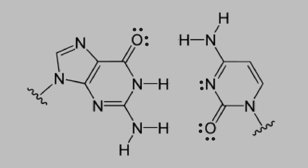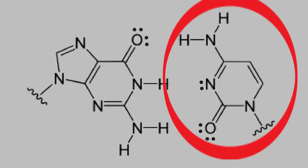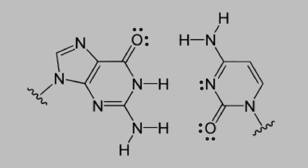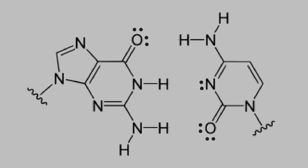As another example, here's a portion of a DNA molecule. This structure is part of one strand of the DNA, and this part is on the other strand. As you can see, each side has hydrogens attached to oxygens or nitrogens, and on the opposite side there are atoms that have unshared electron pairs. That means we'll get several hydrogen bonds between the two DNA strands, and this is a major reason why the two strands of DNA stay attached to each other.